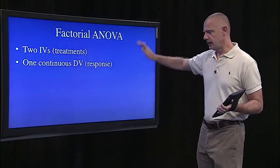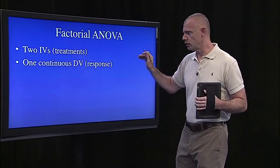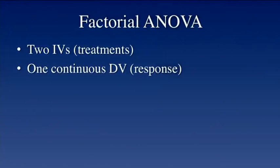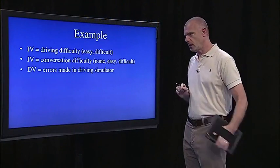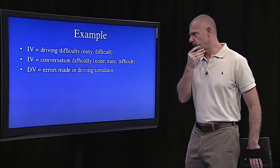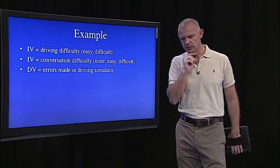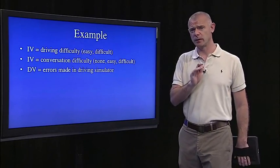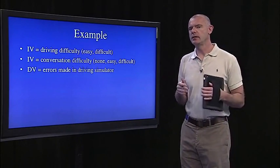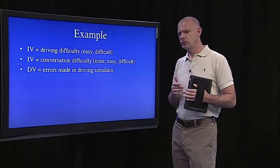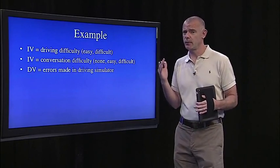In the example we'll walk through here in factorial ANOVA, we'll have two independent variables, or two treatments, and just one continuous response variable. The example I'm going to use is a really nice one. It's based on real research published about ten years ago in a journal called Psychological Science, and the idea is to test hypotheses about whether or not it's safe to be talking on a cell phone while driving.